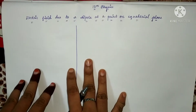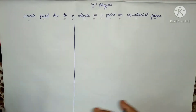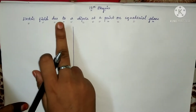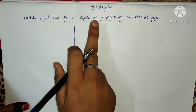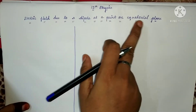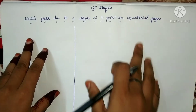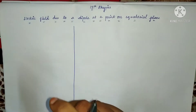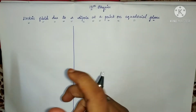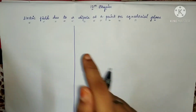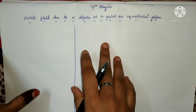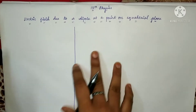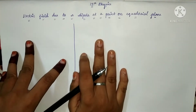Hello viewers, welcome to HHS Karukla. We are going to talk about Physics — specifically, the electric field due to a dipole at a point on the equatorial line. In the previous video I covered the axial line, and I will put the link in the description box. This is one of the important topics in this lesson.